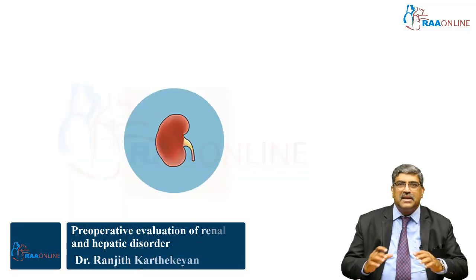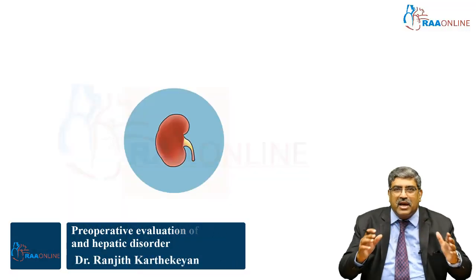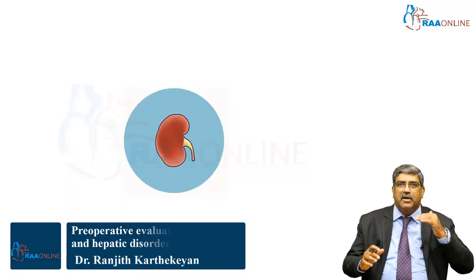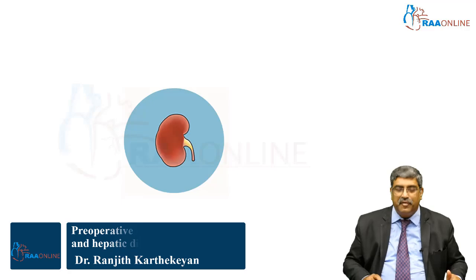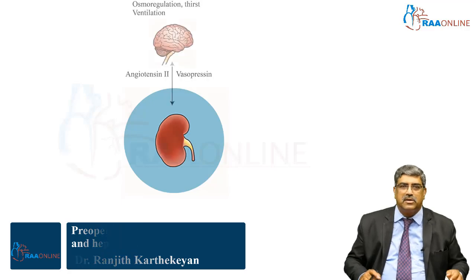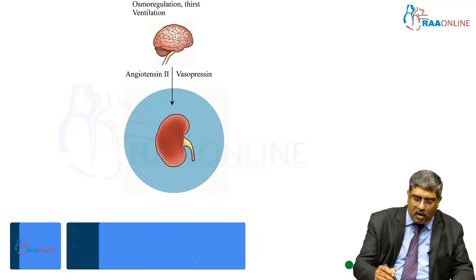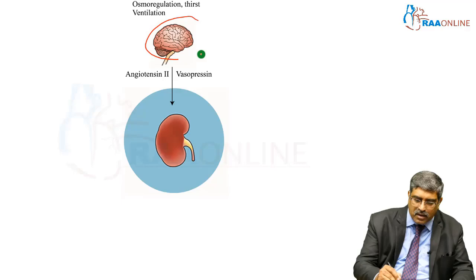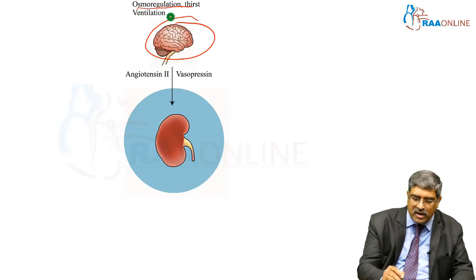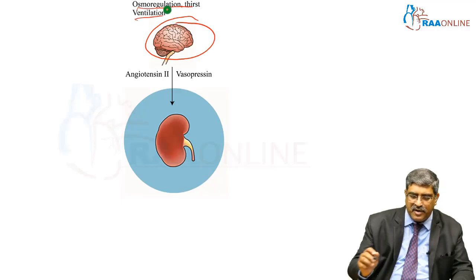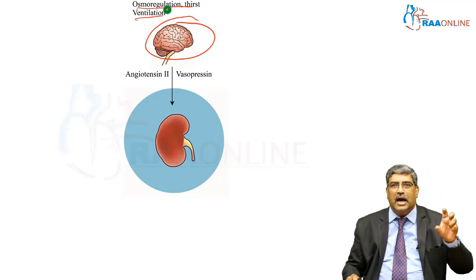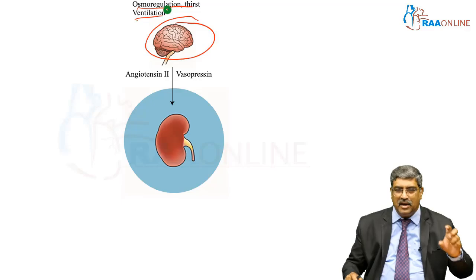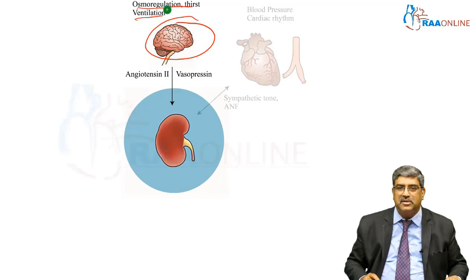Coming to the systemic effect of the kidney with various organ systems, along with the brain, it plays a role in osmoregulation, thirst, and ventilation through angiotensin and vasopressin.